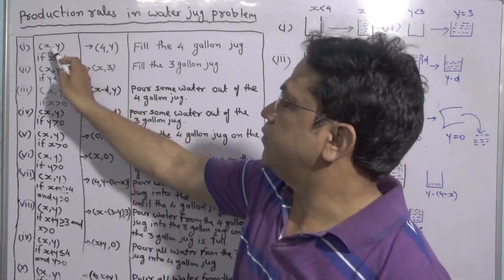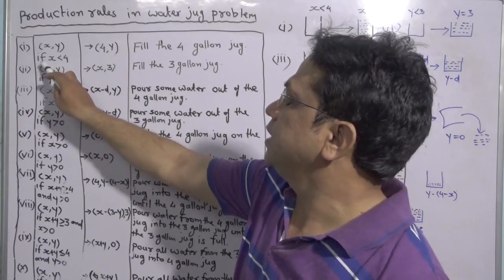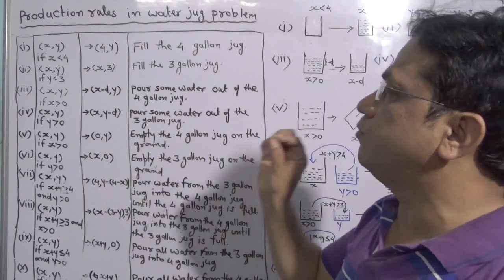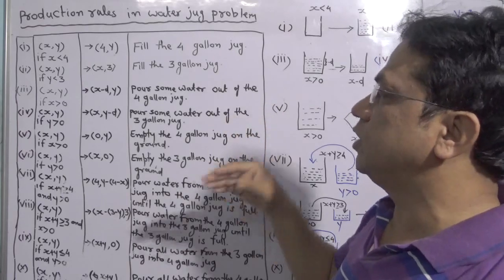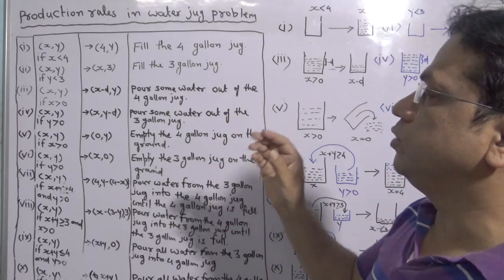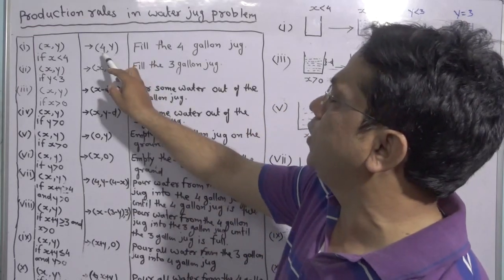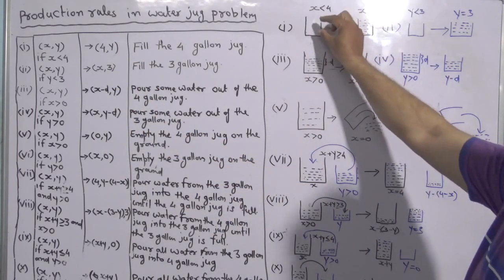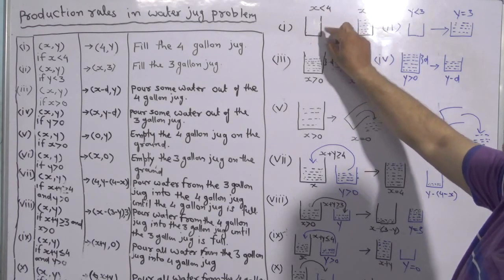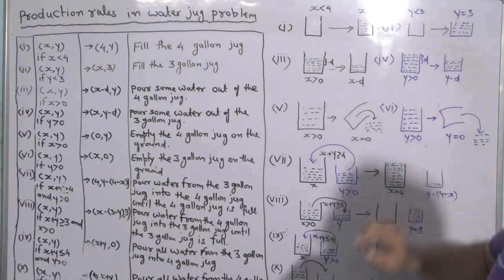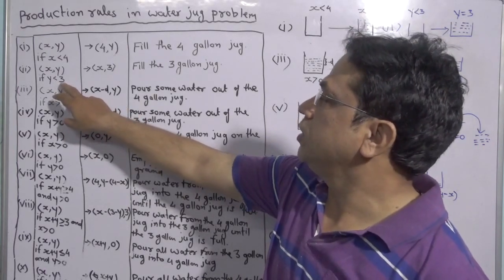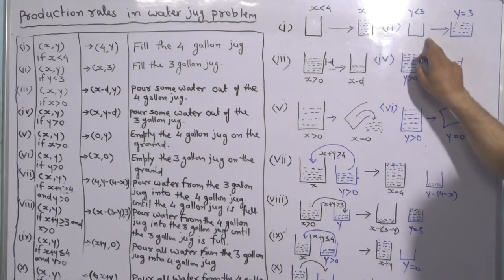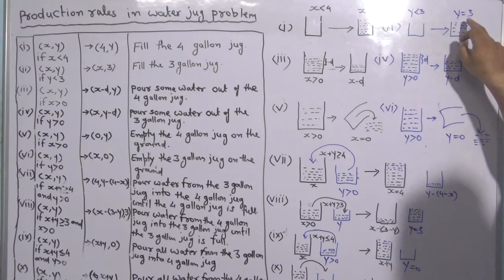X and Y represent the state space. The first production rule says: if X is less than 4 — meaning the X jug has some water but less than 4, it may be 0, 1, 2, or 3 — we will fill it completely, so the state becomes (4, Y). That is shown in this diagram: if the jug has less than 4 gallons, we make it full. Similarly, in rule 2, if Y is less than 3, we fill it completely, so Y becomes 3, as shown in the diagram.